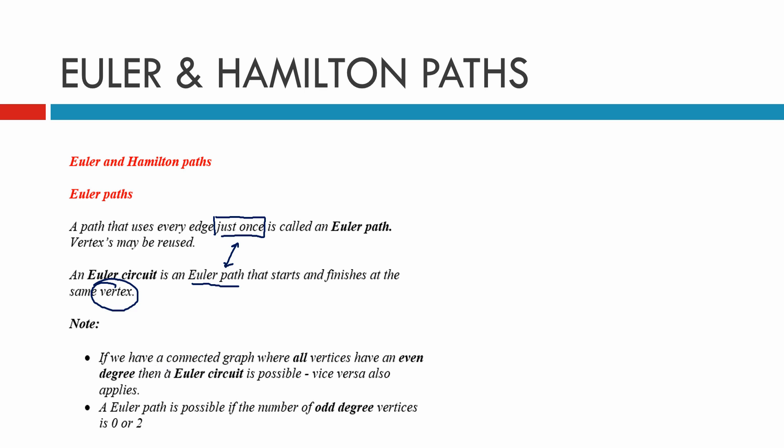Here's a note: if we have a connected graph where all the vertices have an even degree, then an Euler circuit is possible. And you can go the other way - if you've got an Euler circuit, then you have to have a connected graph with all even degree vertices.